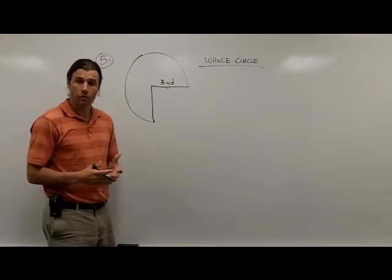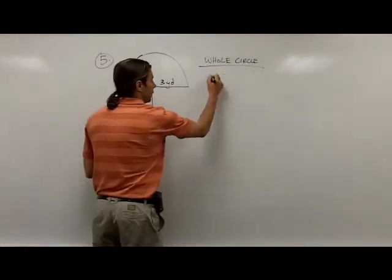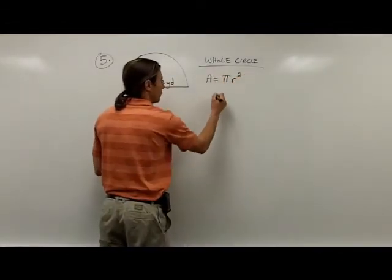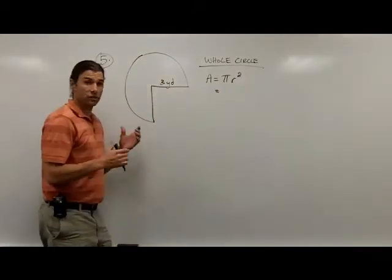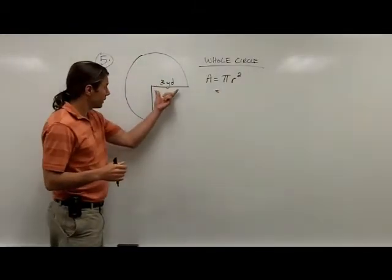To find the area of the whole circle, I'm going to use the formula area equals π times radius squared. In this case, the radius of the circle is given - it's right there, it's 3 yards.